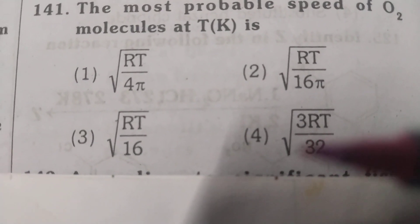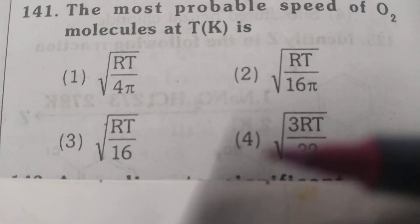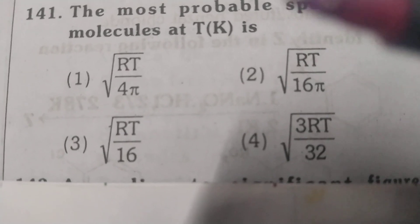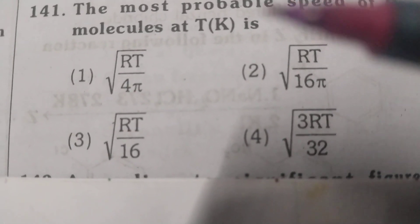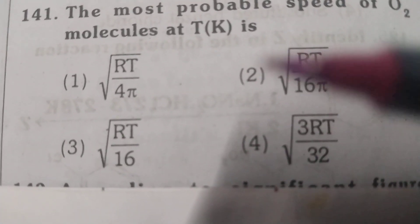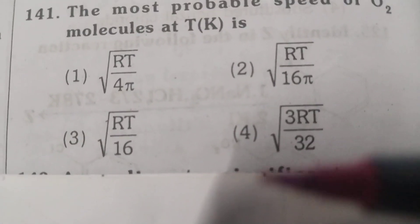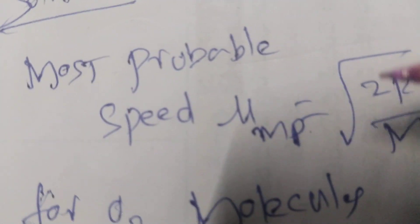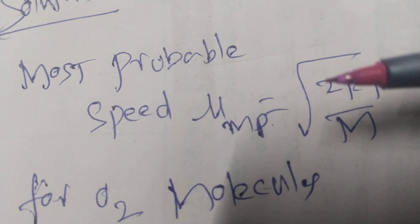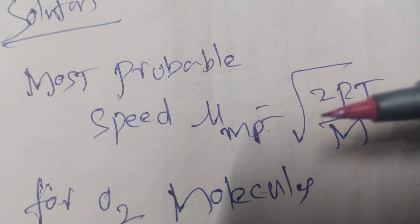Before you calculate the exact answer or correct answer, you are supposed to know what is the formula of most probable, average, and RMS velocity. Most probable velocity is the formula, root of 2RT by M.